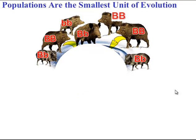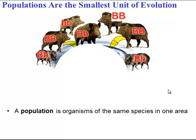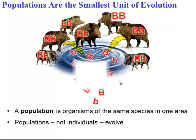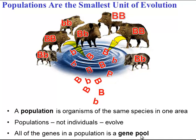Populations are the smallest unit of evolution. A population is a group of organisms of the same species in a particular area, such as this population of wild pigs. And populations, not individuals, can evolve. All of the genes collected together from a population is known as a gene pool.